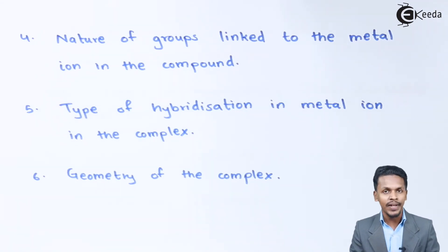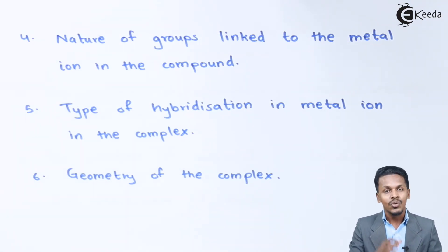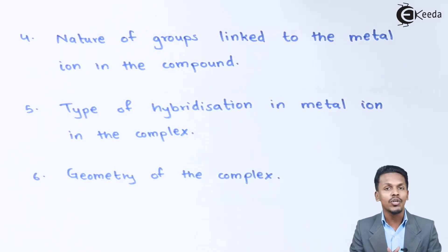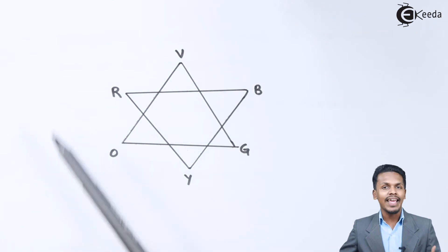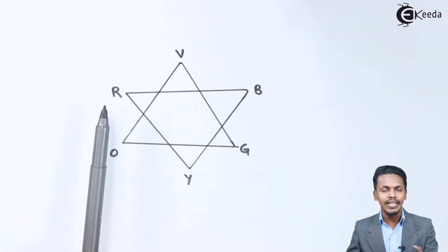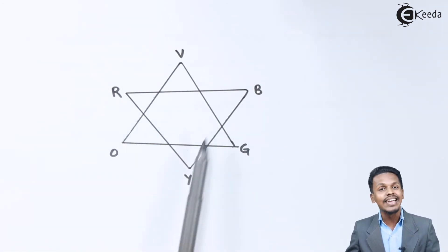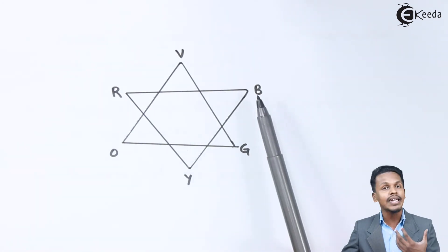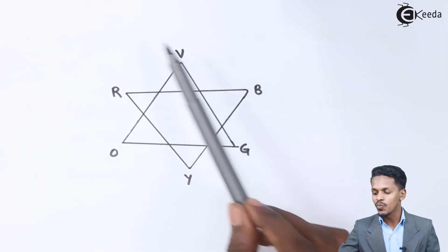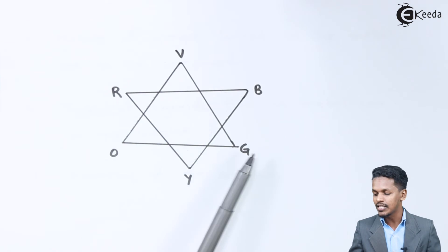As discussed earlier, a particular wavelength is absorbed by the transition metal atom, and after absorption it gives back a color. This is illustrated in a diagram here showing complementary colors. For example, if a red wavelength is absorbed by a particular transition metal ion, it will impart green color — the opposite color. If it absorbs blue color, the compound will appear orange. If it absorbs violet color, the compound will be yellow. These are the complementary colors for each other.